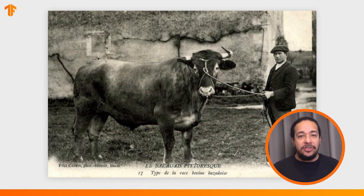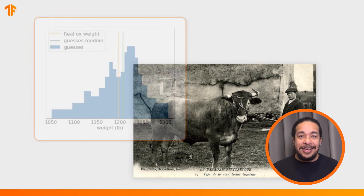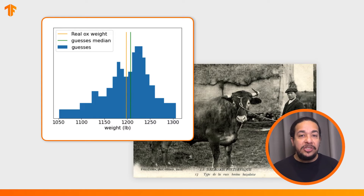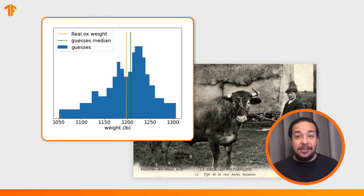In 1906, a weight judging competition was held in England. 787 participants guessed the weight of an ox. On average, each person's guess was 37 pounds away from the correct value. But the overall median of the guesses was only 9 pounds away from the real weight of the ox, which was around 1200 pounds — an error of less than 1%. So why am I bringing up this story?